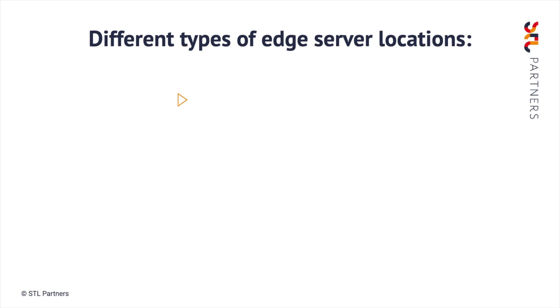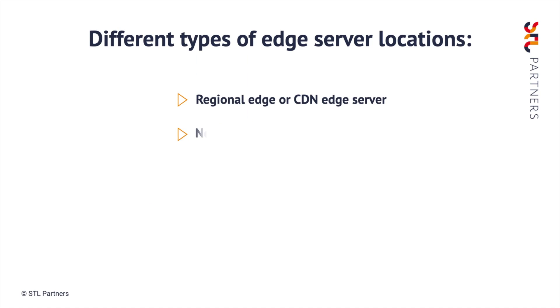I'm going to talk through four different types of edge server locations: first, the regional edge or CDN server; second, the network edge; third, the on-premise edge; and finally, the device edge.